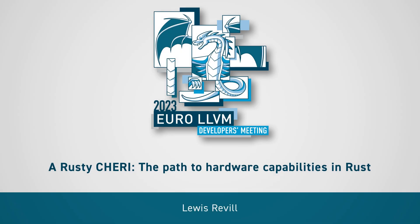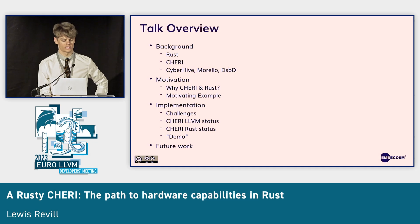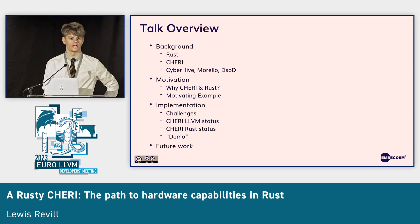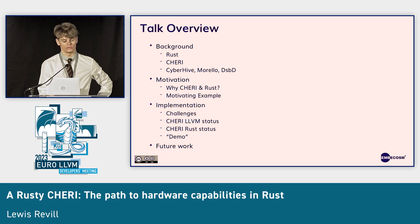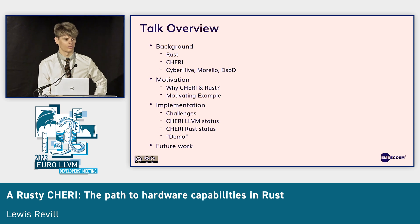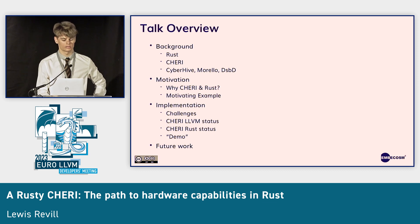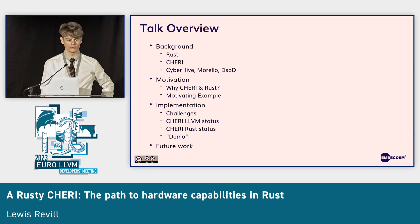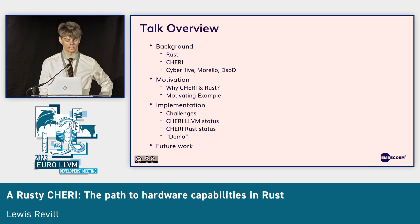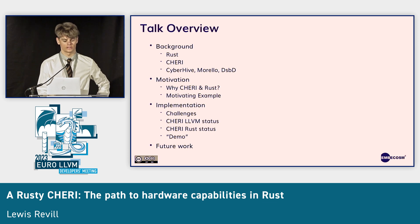We'll talk a bit about the specific project that I'm working on. We'll cover some motivation behind why we're doing what we're doing with the Rust compiler in CHERI, and we'll also move on to the details of the implementation — what challenges we face and what changes now exist in LLVM and Rust to overcome these challenges. There will be somewhat of a demo, which is actually just some screenshots of things that I did yesterday, and we'll finish off with discussion of what still needs to be done for this project.